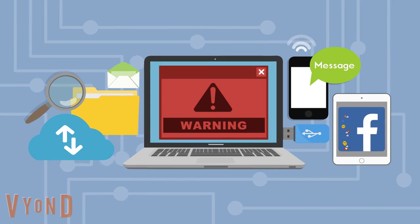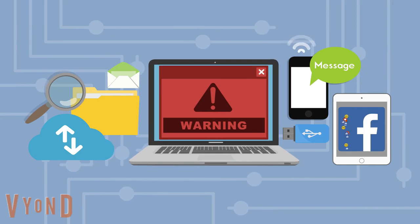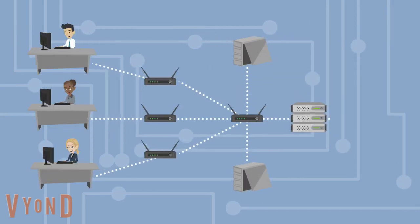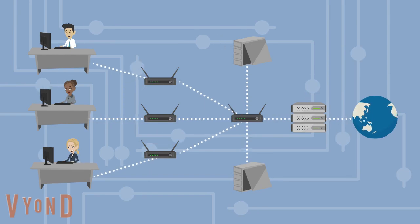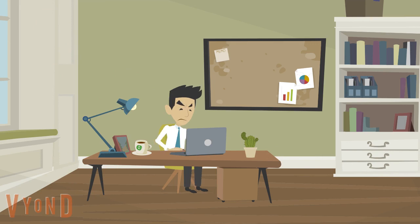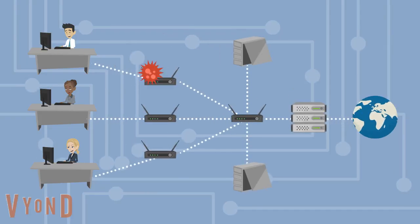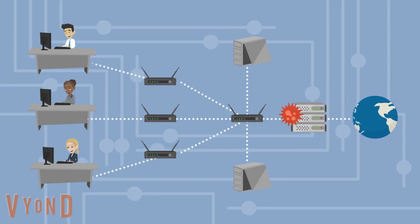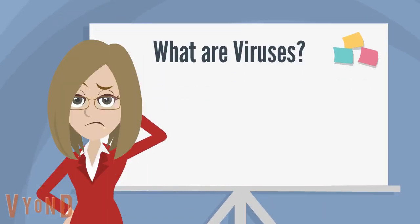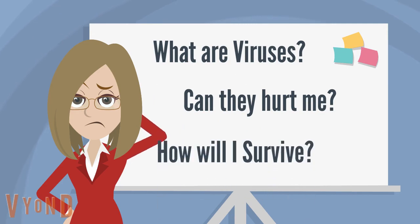A computer virus is a piece of program code that, when executed, spreads within and between computers, either by physical transmission, remote deployment or by stealth, evading detection by hiding within seemingly innocuous documents, files and applications, or by replicating and dispersing their progeny to other applications and computers. But what are they? What is the threat? And how can we protect ourselves?